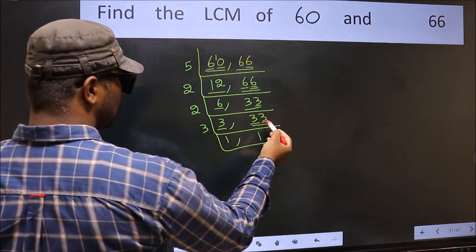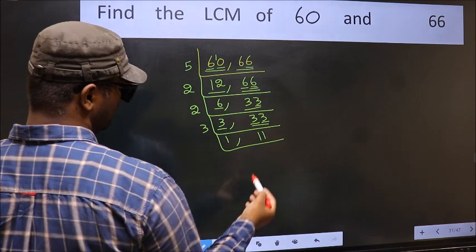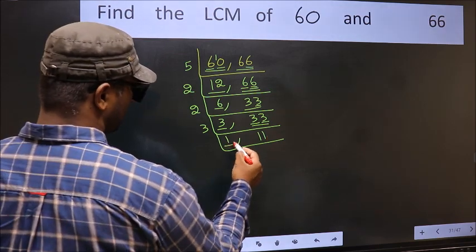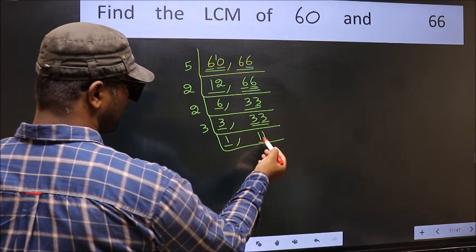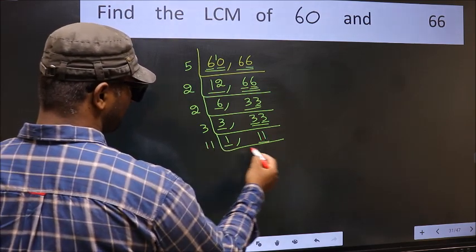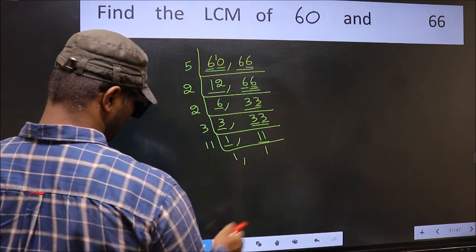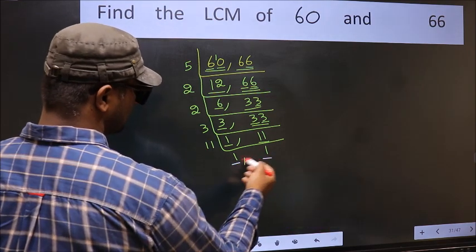The other number 3, when do we get 3 in 3 table? 3 once is 3. Now we got 1 here, so focus on the other number 11. 11 is a prime number, so 11 once is 11. So we got 1 in both the places.